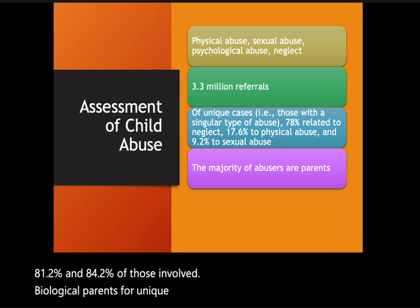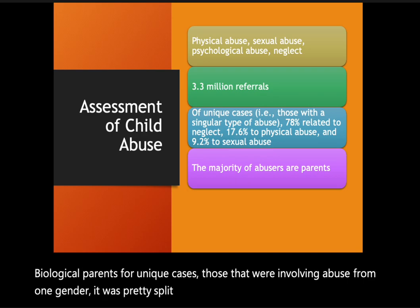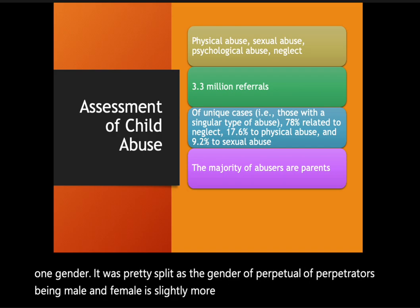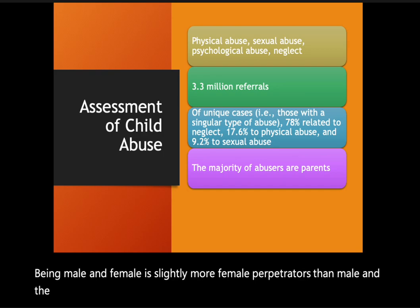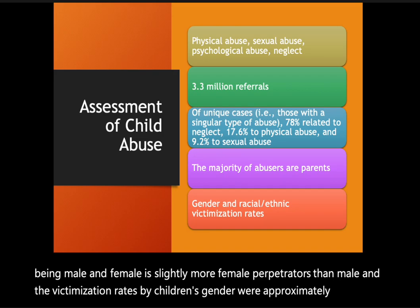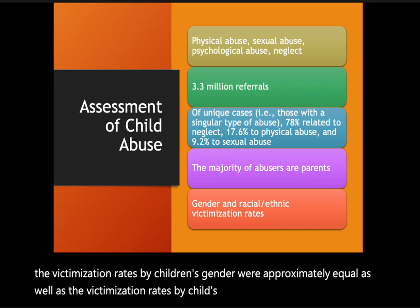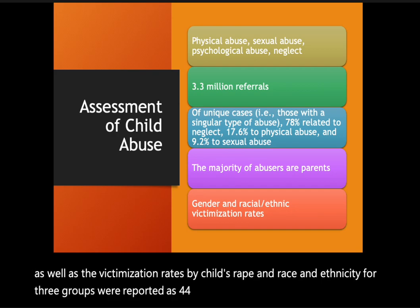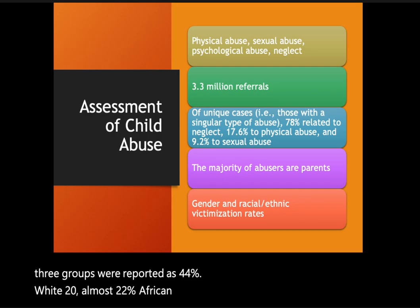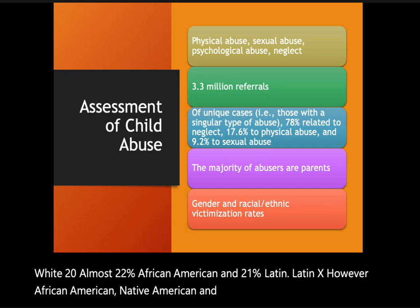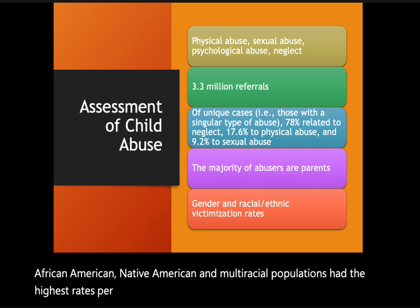For unique cases involving abuse from one gender, it was pretty split — there were slightly more female perpetrators than male. Victimization rates by children's gender were approximately equal, as were rates by child's race and ethnicity. Three groups were reported as 44% white, almost 22% African American, and 21% Latinx. However, African American, Native American, and multiracial populations had the highest rates per 1,000 children at 14%, 11%, and 12% respectively.